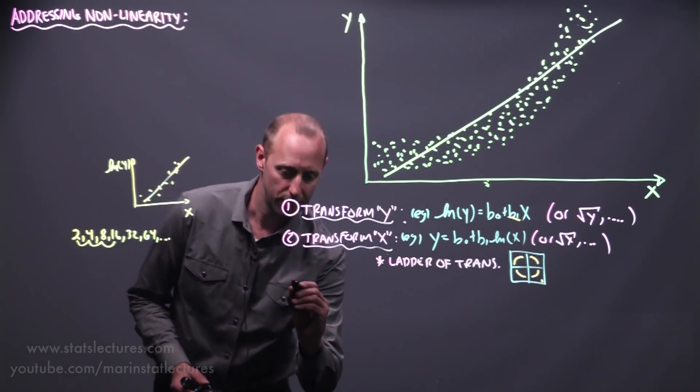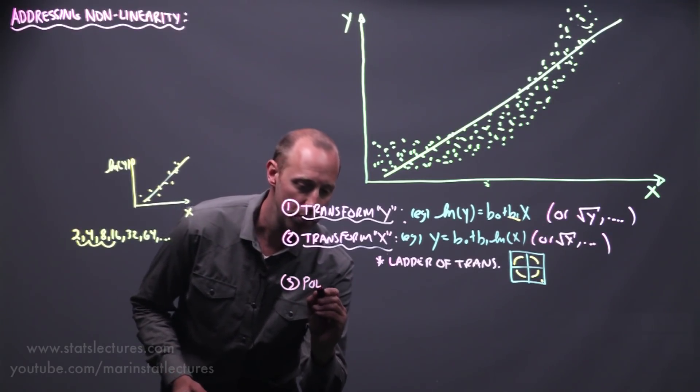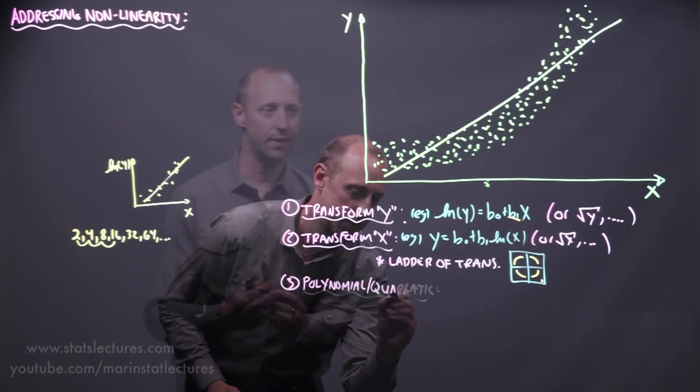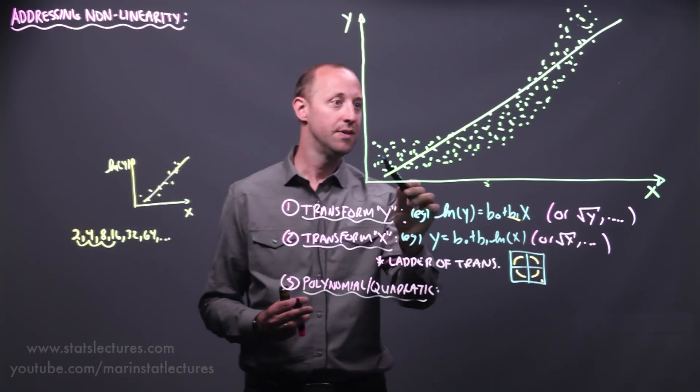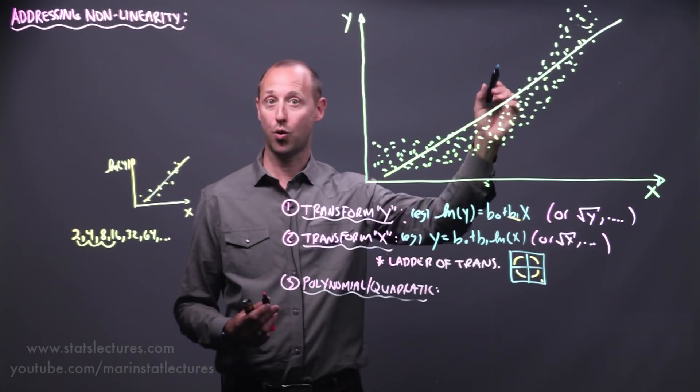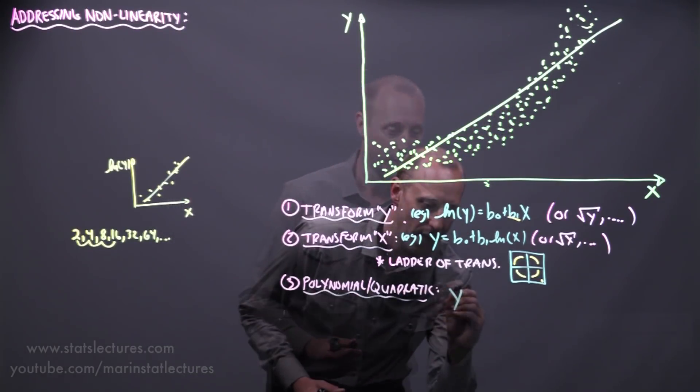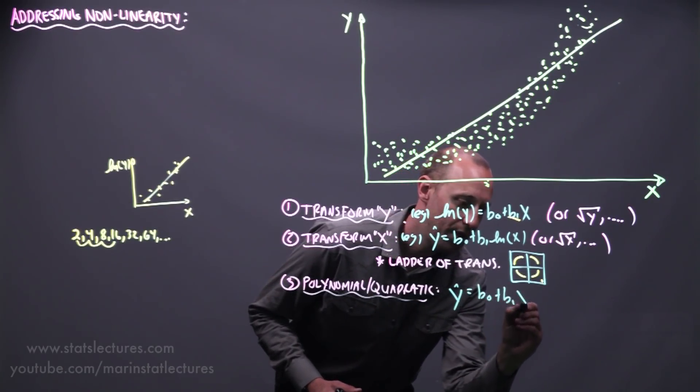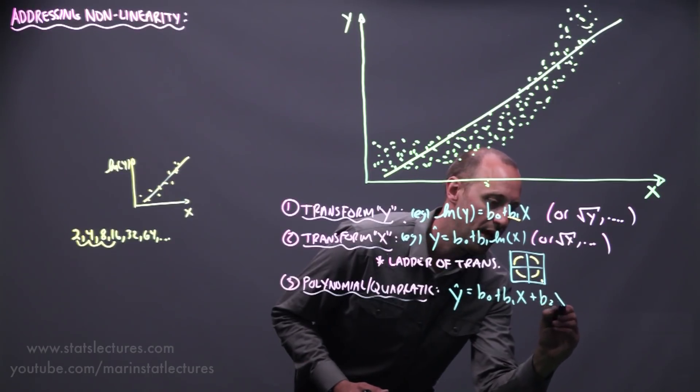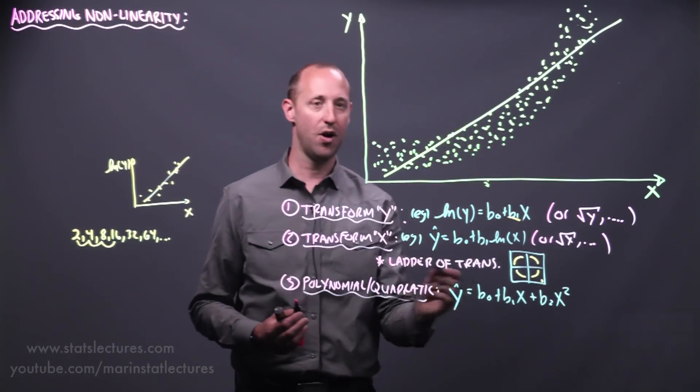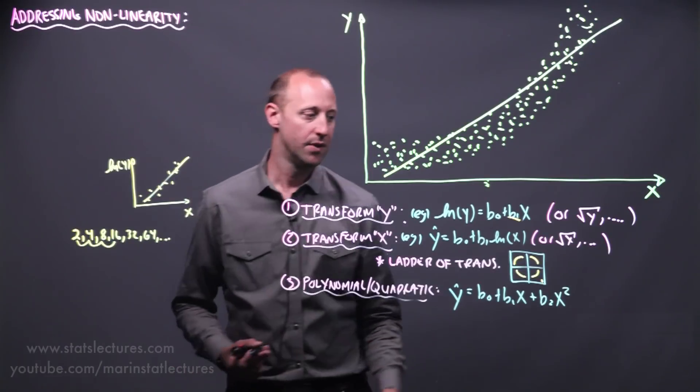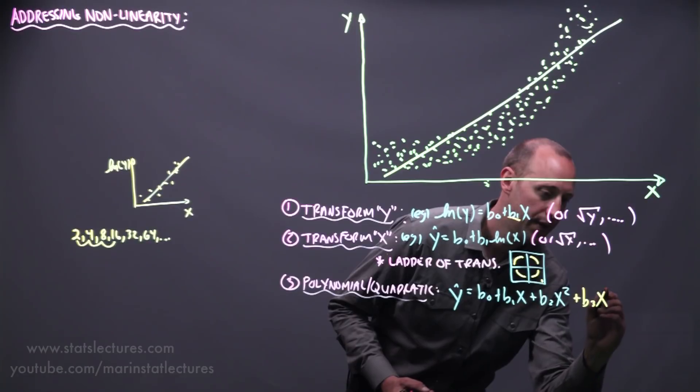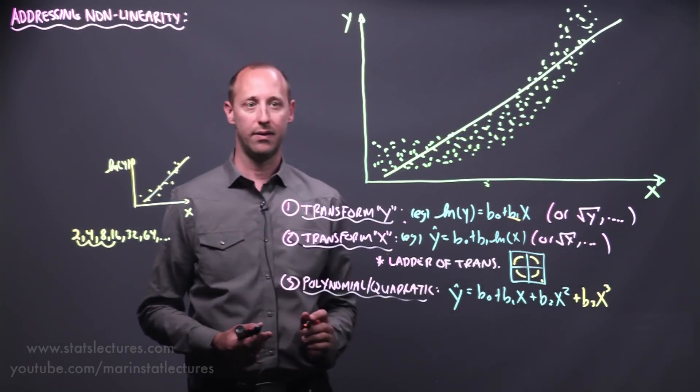Another approach that one can try is using a polynomial or quadratic. And what this involves is rather than fitting a line, you're going to fit some quadratic curve to this. y hat is b0 plus b1x plus b2x squared. So model x and x squared. You might want to include higher order terms. You also might want to include x cubed.